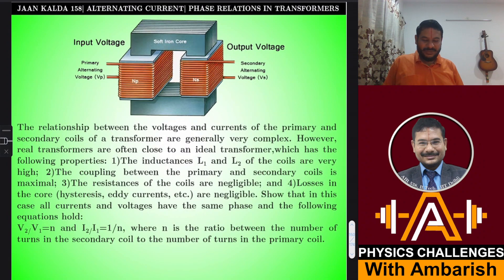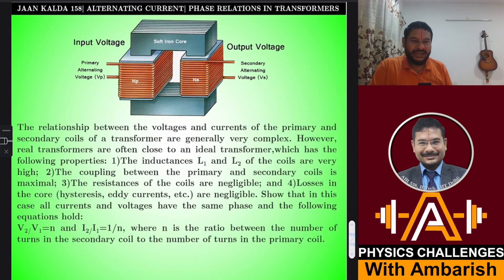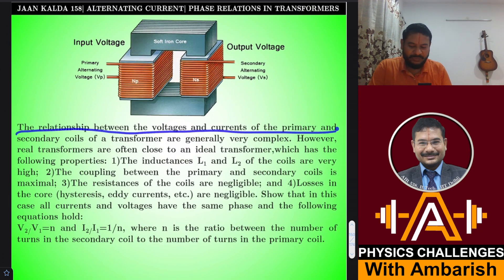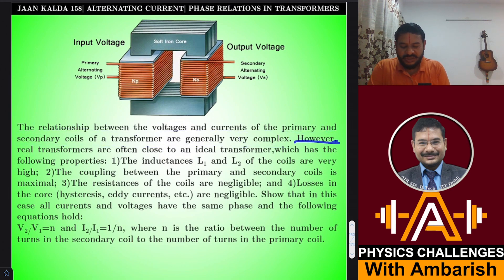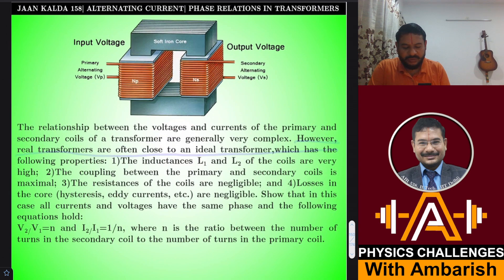Without much ado, let me state Jan Kalda's problem and explain how things work out. The problem statement says: the relationship between voltages and currents of primary and secondary coils of a transformer are generally very complex. However, real transformers are often close to an ideal transformer which has the following properties.